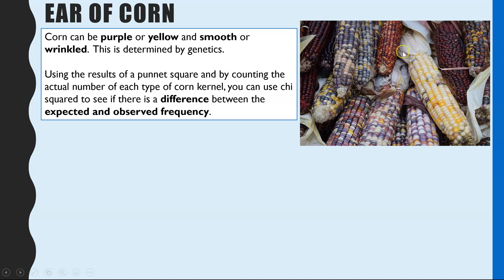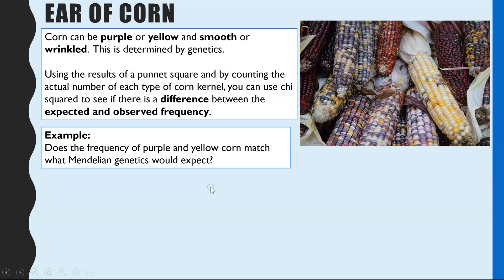The example uses an ear of corn. In the UK you're probably not familiar with seeing corn on the cob like this, because at supermarkets we just get it as yellow corn, but in reality there are lots of different variations determined by alleles. You can get corn which is purple, yellow, smooth, or wrinkly in texture — quite a good example because you can clearly observe the different phenotypes. We're going to look at: does the frequency of purple and yellow corn match what Mendelian genetics probability states we would expect?